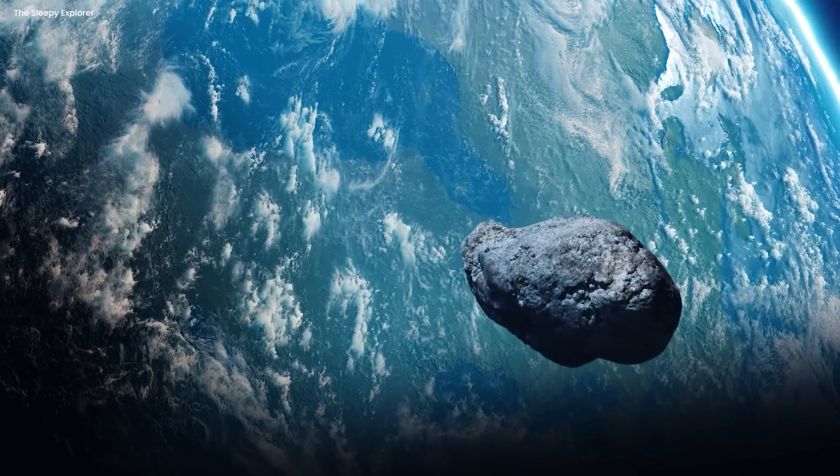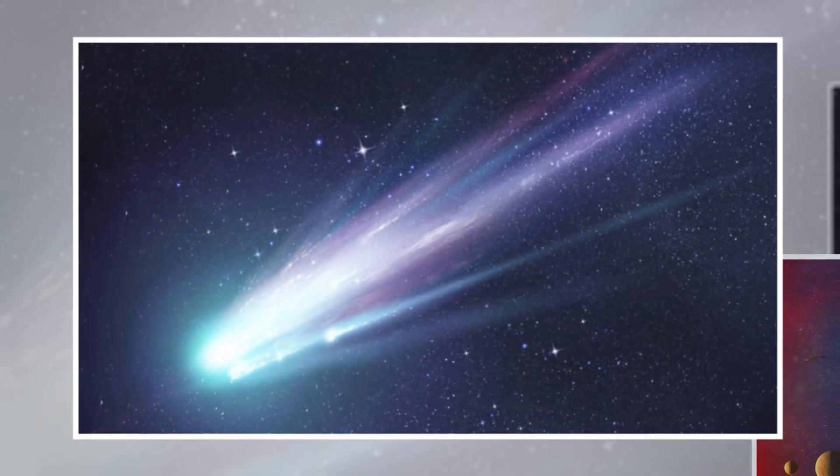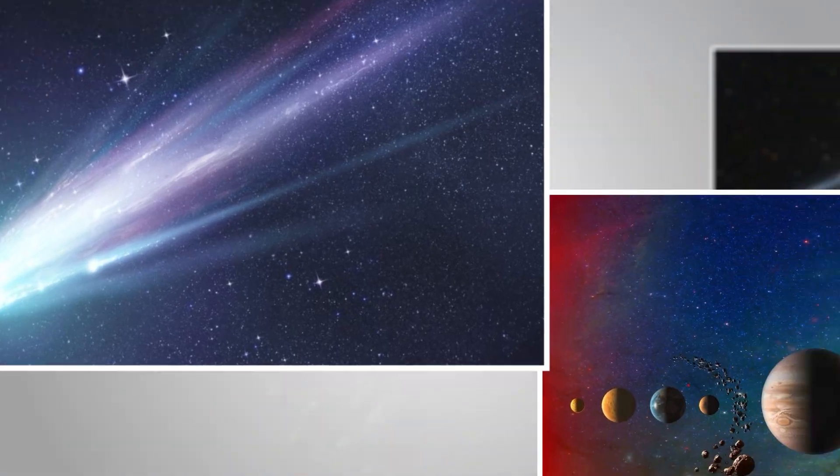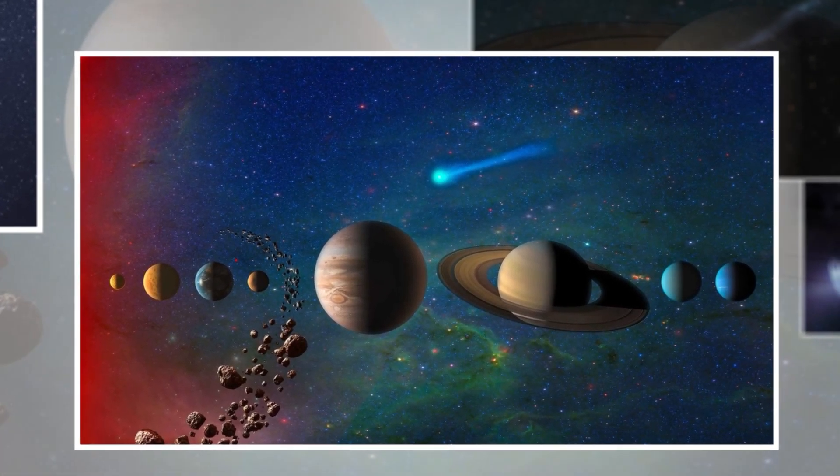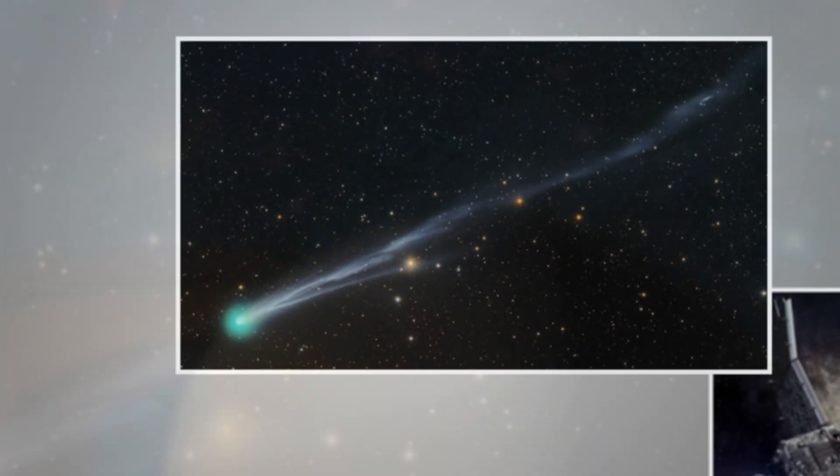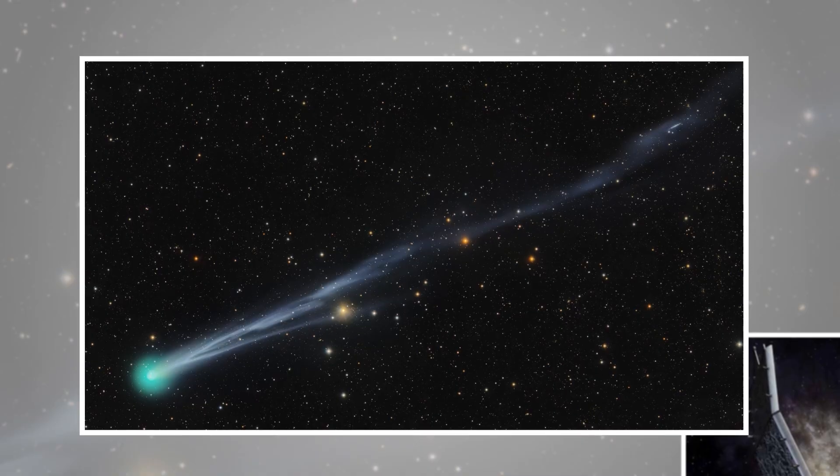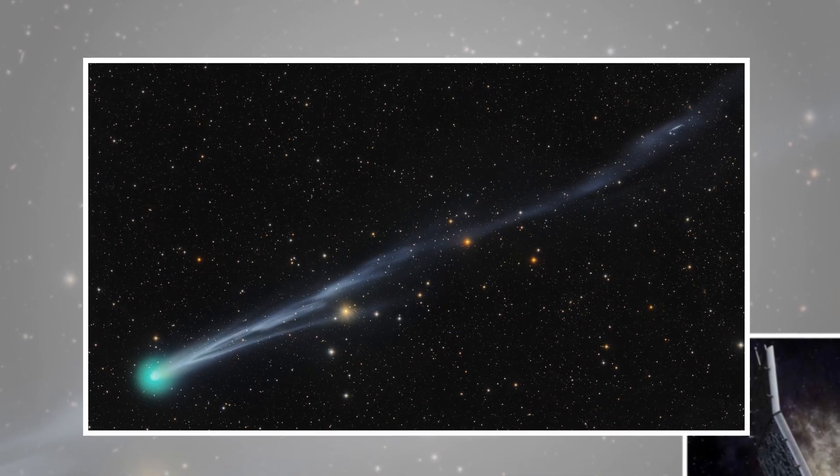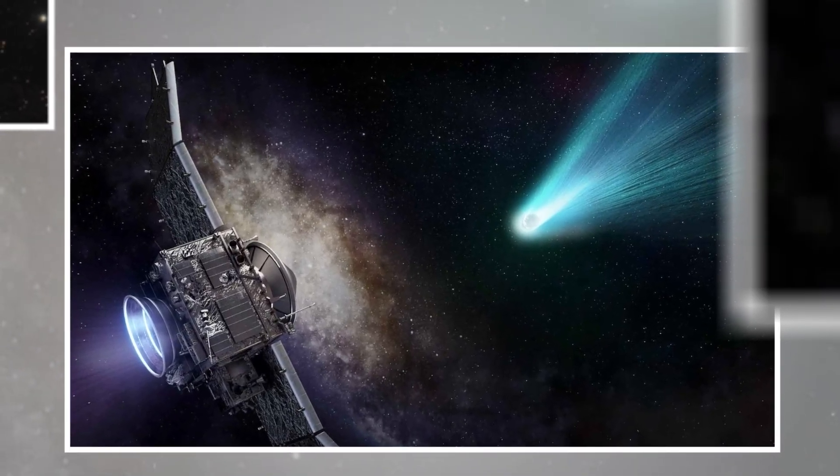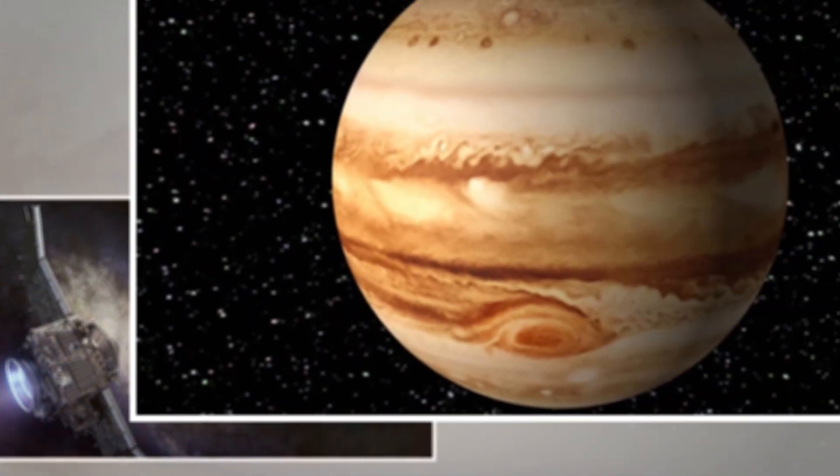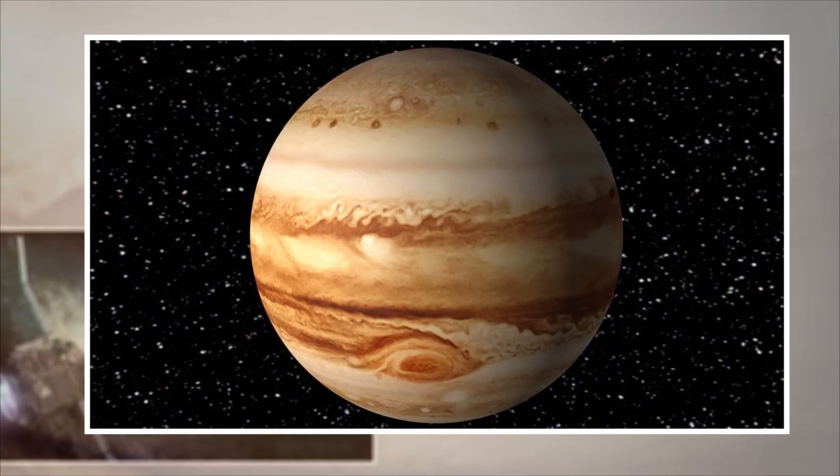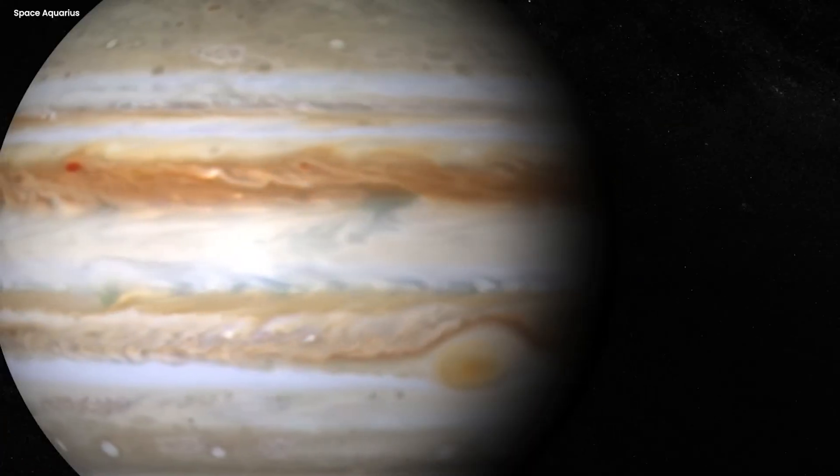So Earth barely registered. We got skipped. And now 3I Atlas is headed straight for Jupiter. It's going to fly within 53 million miles of the gas giant, which is closer than it got to any other planet in the solar system. And then after Jupiter, it's going to leave the solar system completely and head back out into interstellar space. So if you map out the entire journey, Mars got a decent flyby, Earth got ignored, and Jupiter gets the closest encounter. That's the actual story. And it raises an obvious question. Why Jupiter?